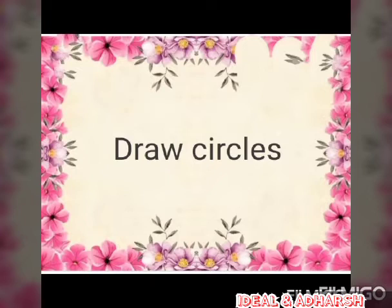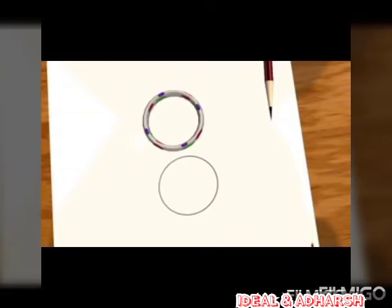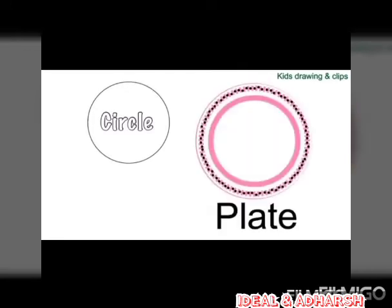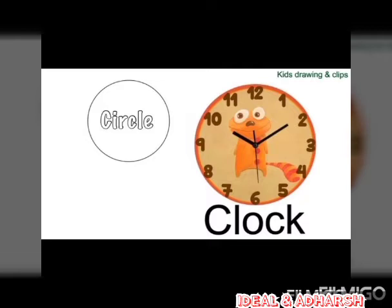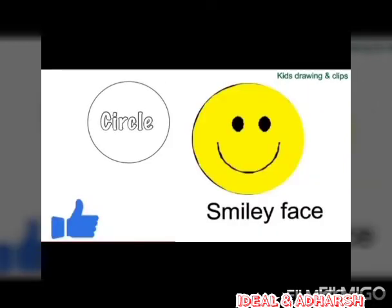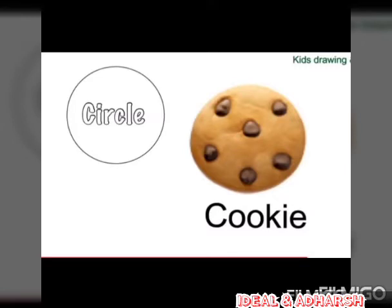Next, we will see an interesting topic — drawing circles. We can use many objects: a bangle, a coin, a plate, a clock, a button, a smiley face badge, cookies, and a disc.